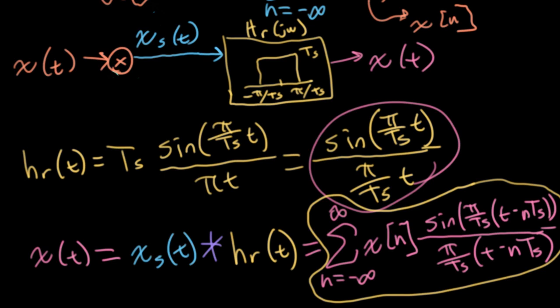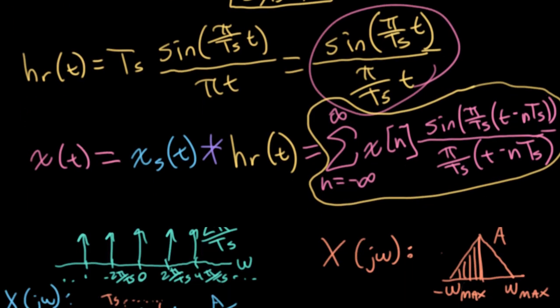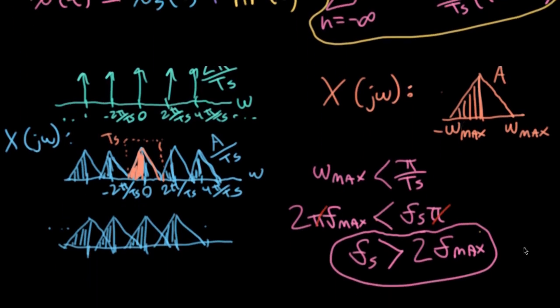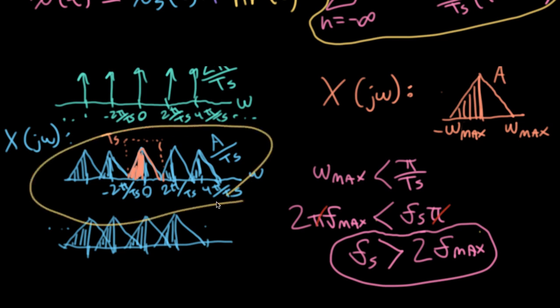So the main lobe of that sinc function entirely defines what the reconstruction is at a sample point where we do have the original data. The fact that the side lobes decrease means that in all of the points in between, where all of these sinc functions are contributing to fill in the spaces between the samples, the samples that are nearer have greater weight than the samples that are further away.